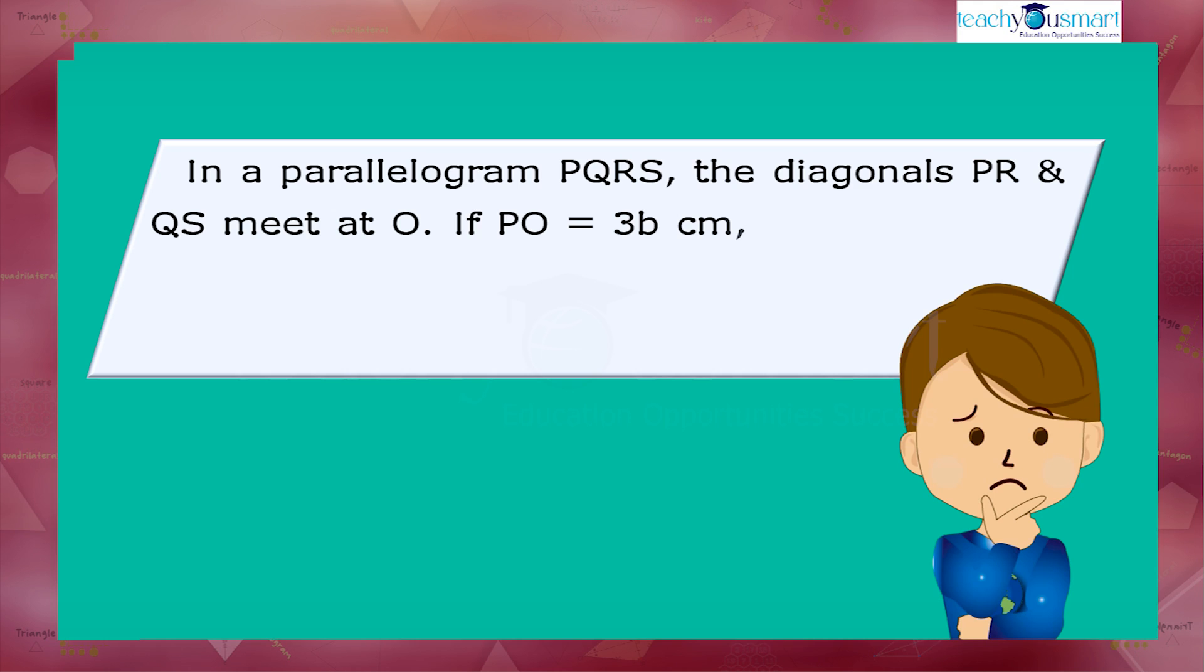If PO equals 3b cm, QO equals 4 cm, RO equals 9 cm, and SO equals a minus b cm, then find a and b.